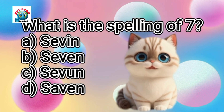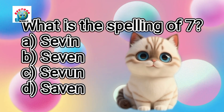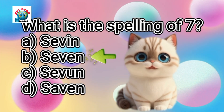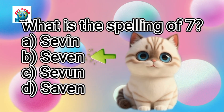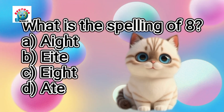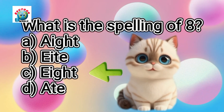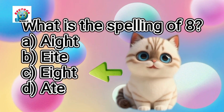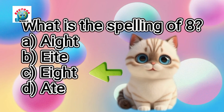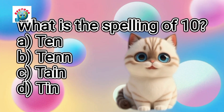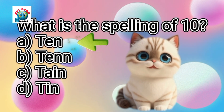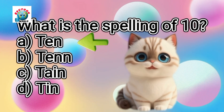What is the spelling of digit 7? The correct answer is option B, SEVEN 7. What is the spelling of digit 8? The correct answer is option C, EIGHT 8. What is the spelling of digit 10? The correct answer is option A, TEN 10.